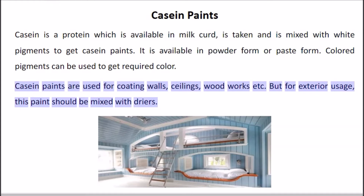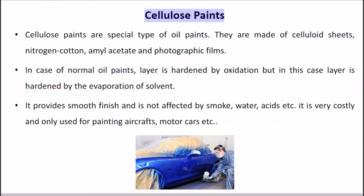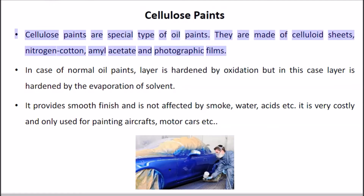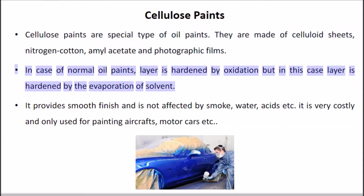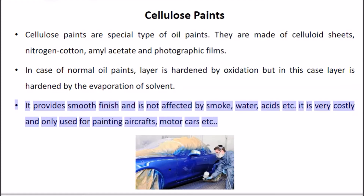For exterior usage, casein paint should be mixed with dryers. Cellulose paints are a special type of oil paints. They are made of celluloid sheets, nitrogen cotton, amyl acetate, and photographic films. In normal oil paints the layer is hardened by oxidation, but in cellulose paints the layer is hardened by evaporation of solvent. It provides a smooth finish and is not affected by smoke, water, or acids. It is very costly and only used for painting aircrafts and motor cars.